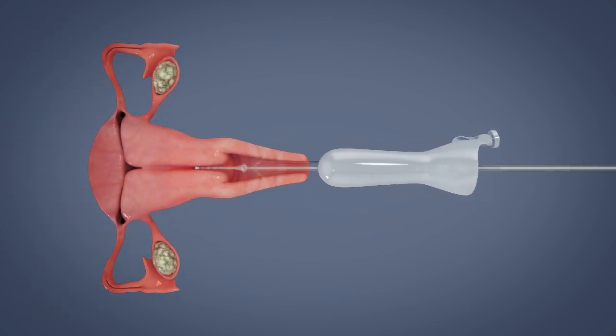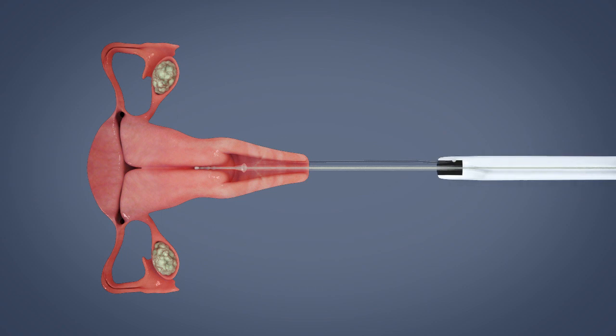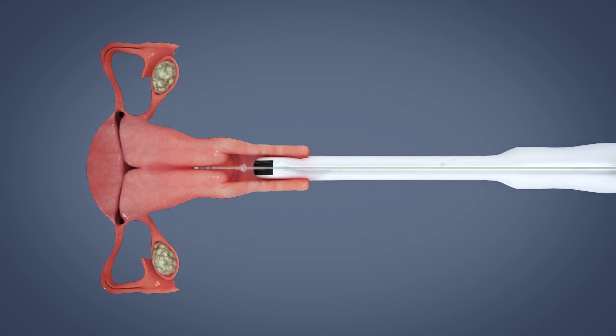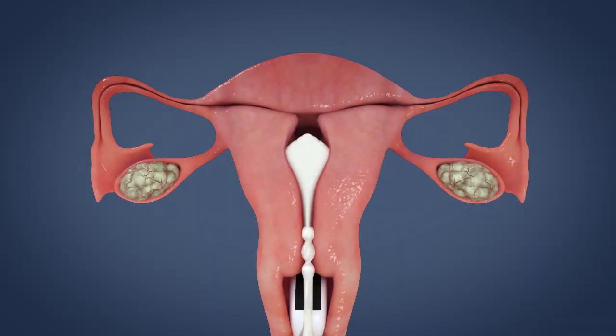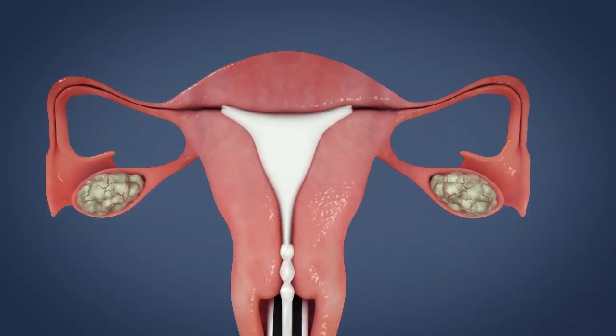Gently introduce the catheter into the cervix. Remove speculum, position the ultrasound transducer, and slowly infuse the gel foam in order to avoid discomfort.